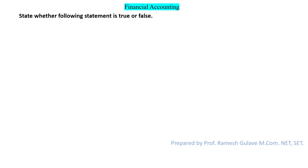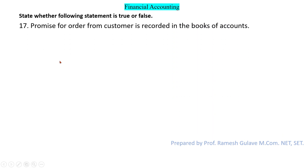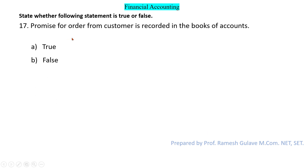The next question is a true or false statement: promise for an order from a customer is recorded in the books of account. This statement is false because a promise for an order from a customer is not recorded in the books of account — we cannot record that transaction.